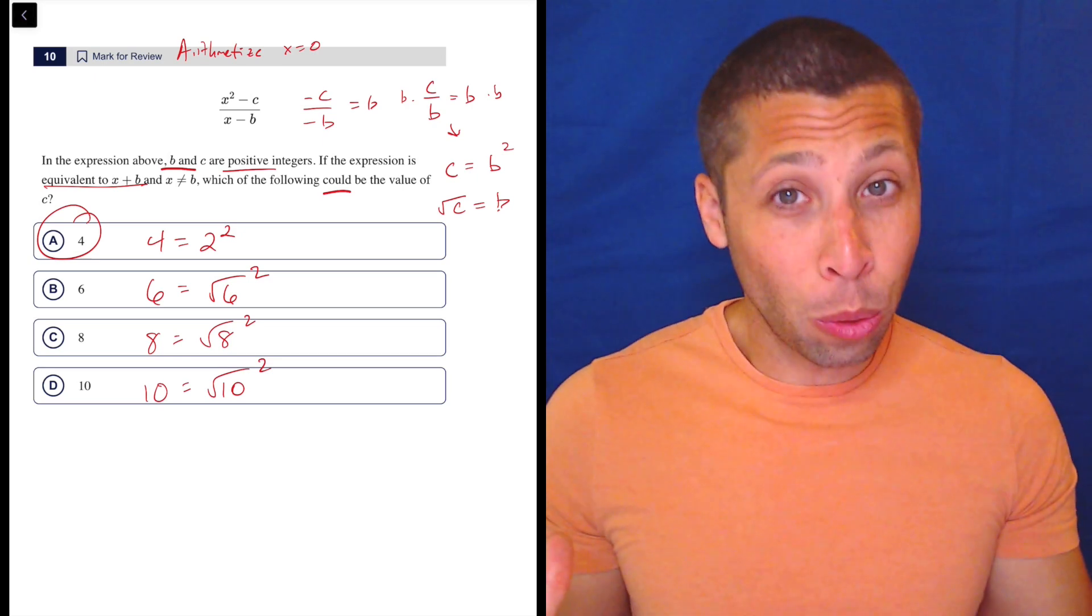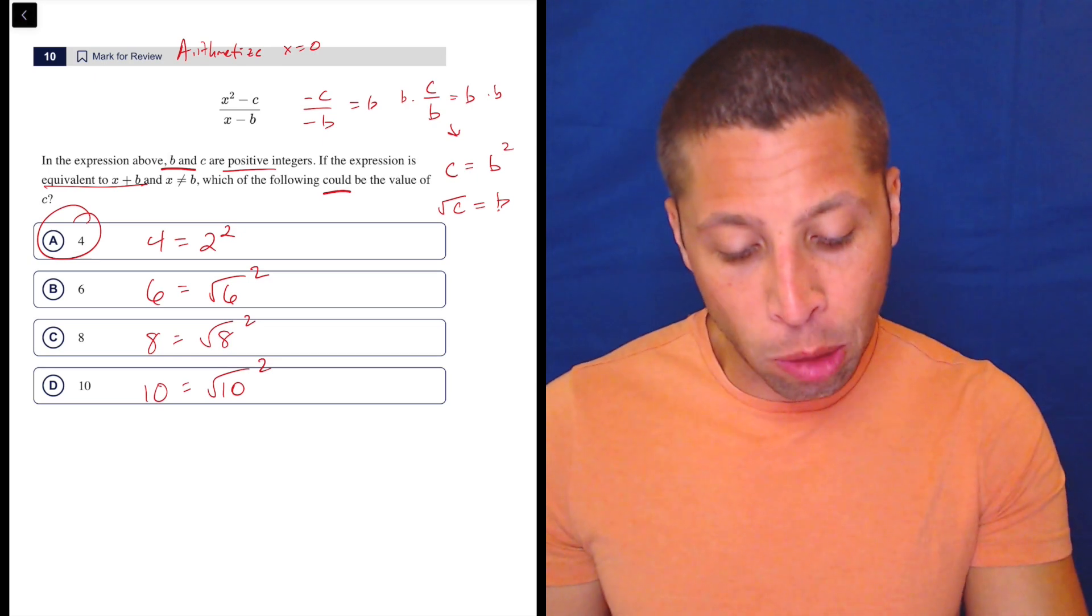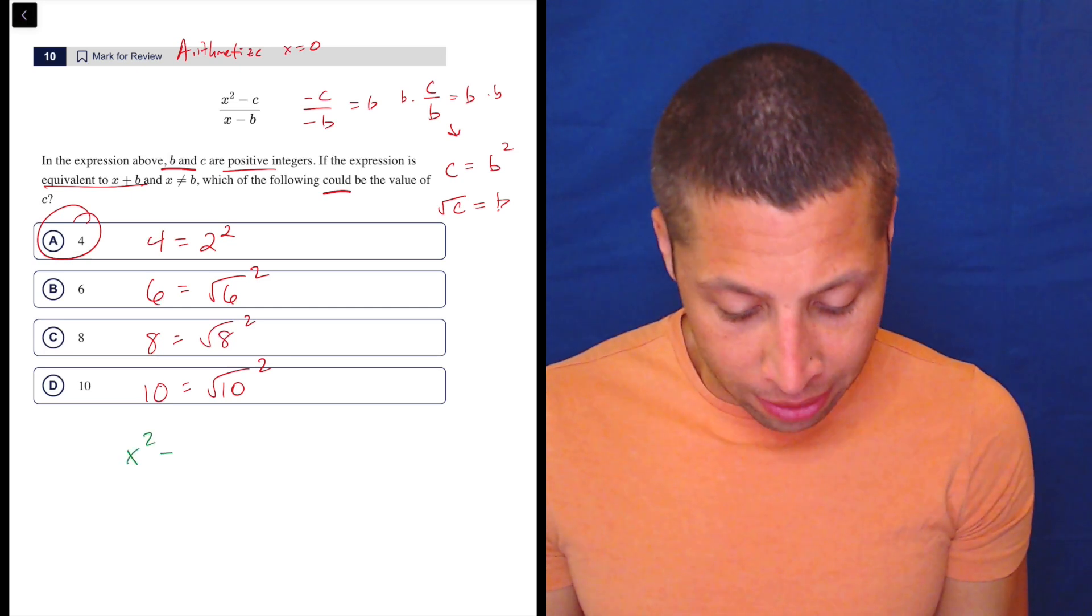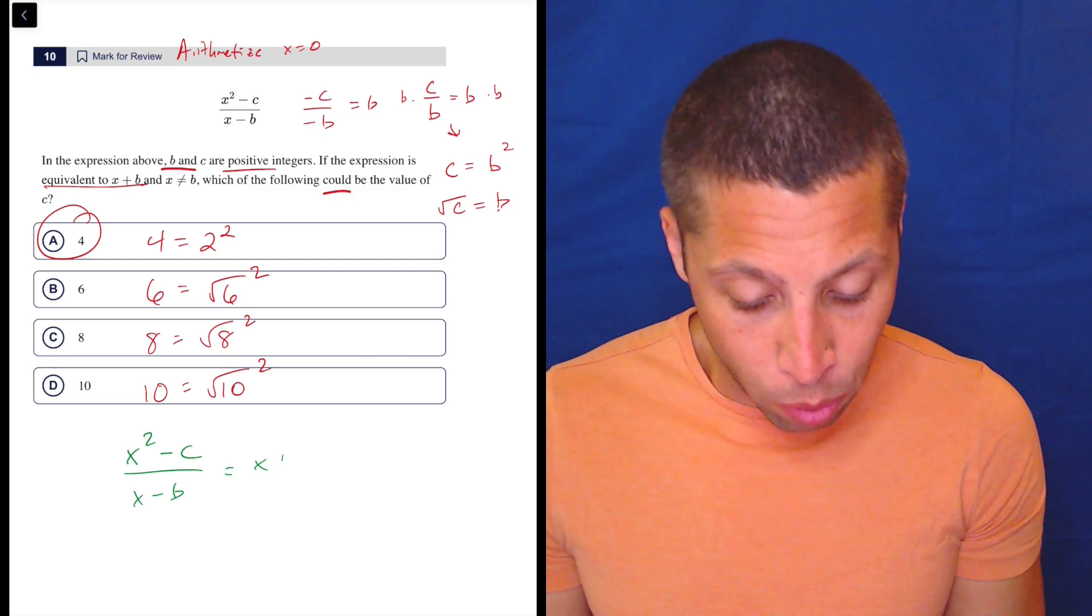That's still very conceptual, which I don't love, but at least maybe it's a little less conceptual than if we had done it the algebraic way, which would have been to kind of write this equation as x squared minus C over x minus B is equal to x plus B.